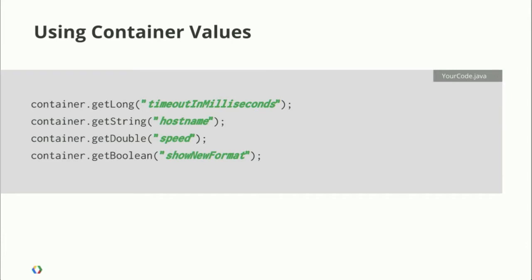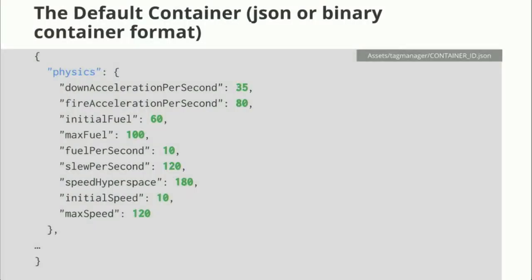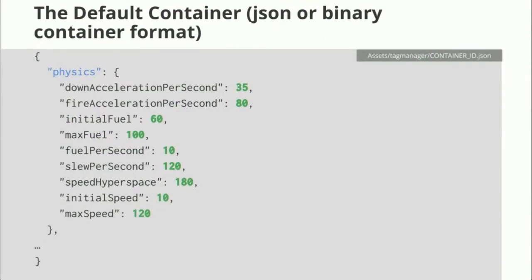If you run your application and there is no network connection — say your user has never connected to the network — there's a default container. The default container is a JSON file, or you can create your container on the website, download it, and use that binary format. It has initial values for all of your keys. So when you ship your application, you're shipping not just the application, you're also shipping this default container. That way your application can run without any network connection. Once a network connection happens and we download a newer version of the container, that newer version will be used. The SDK will check twice a day — so normally you're no more than 12 hours out of date.